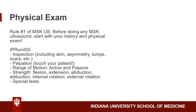Rule number one when doing your musculoskeletal ultrasound: make sure you do a proper history and physical exam. When you're doing a shoulder ultrasound, there are a lot of different structures that could potentially be causing the pain for your patient, so you want to make sure to first do a good thorough history and physical exam to know exactly what you're going to be looking for.